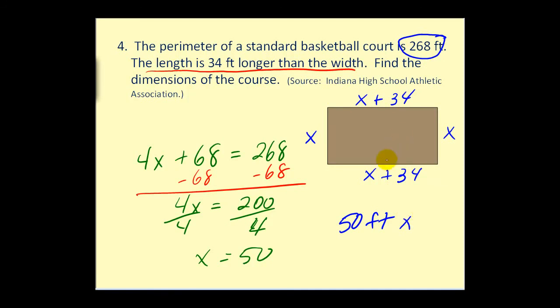By, and the length is x plus 34. 50 plus 34 would be 84. So the dimensions of the basketball court would be 50 feet by 84 feet.